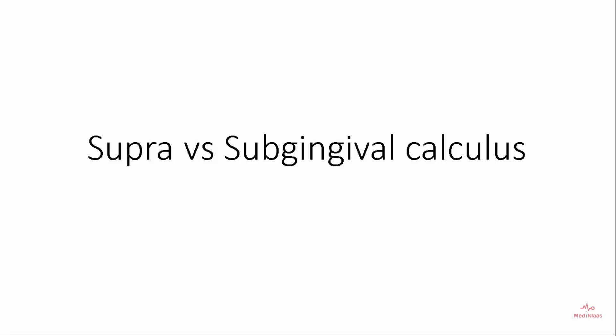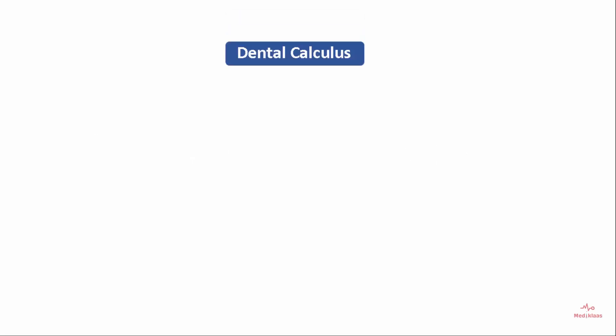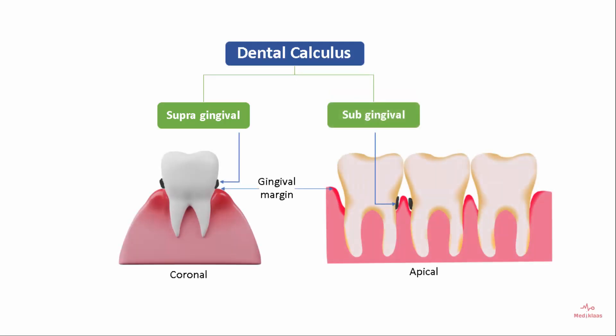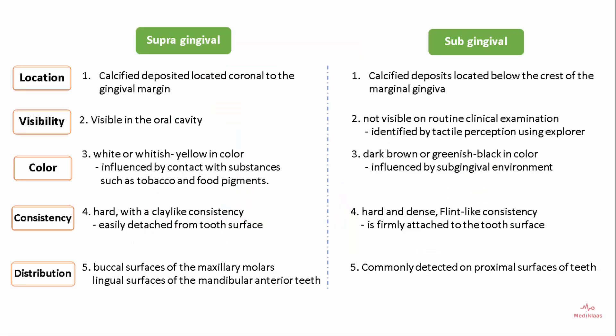Dental calculus is of two types: supragingival and subgingival. The supragingival calculus lies coronal to the gingival margin, whereas the subgingival calculus lies apical to the gingival margin. These two types can be differentiated based on different categories.